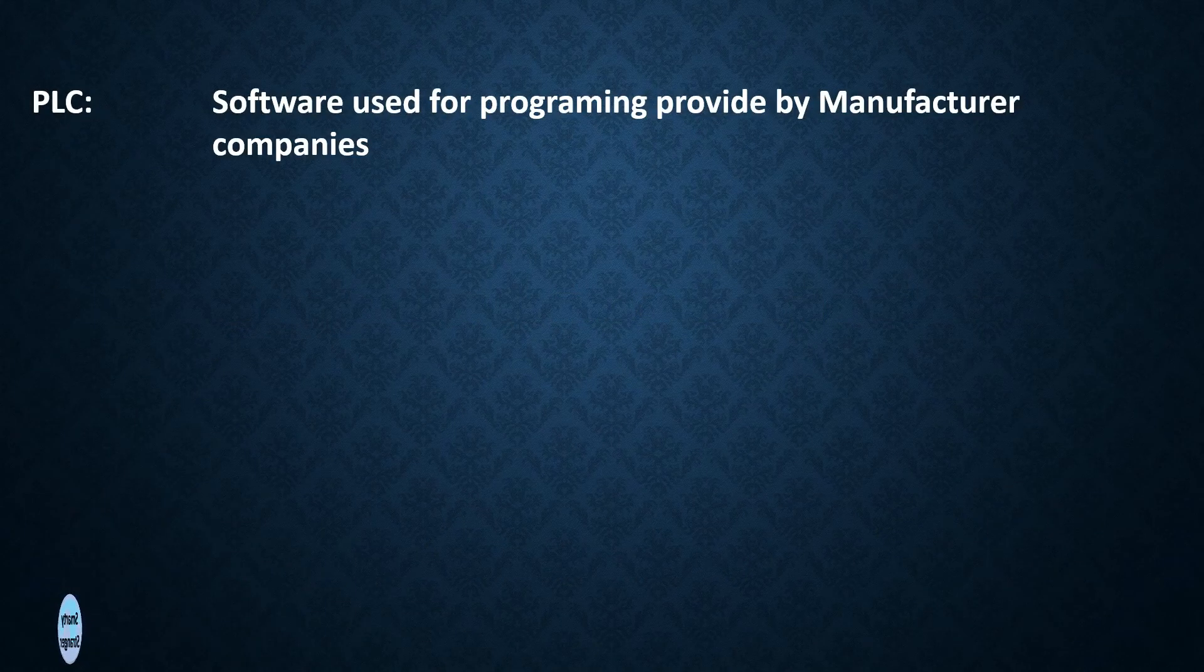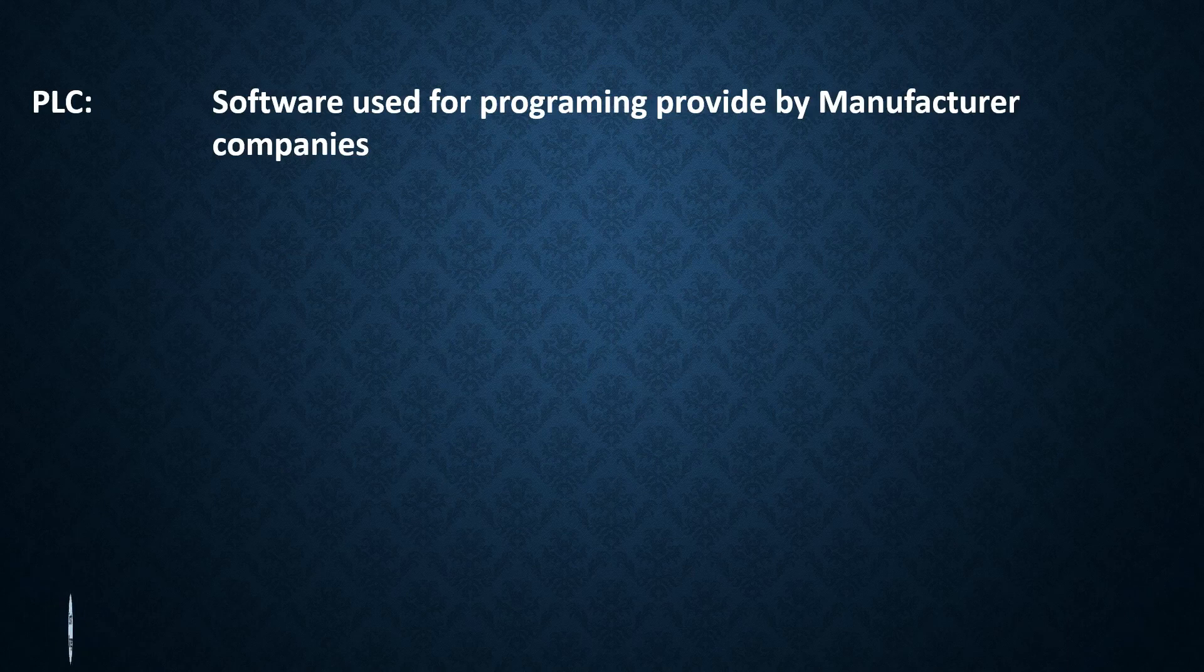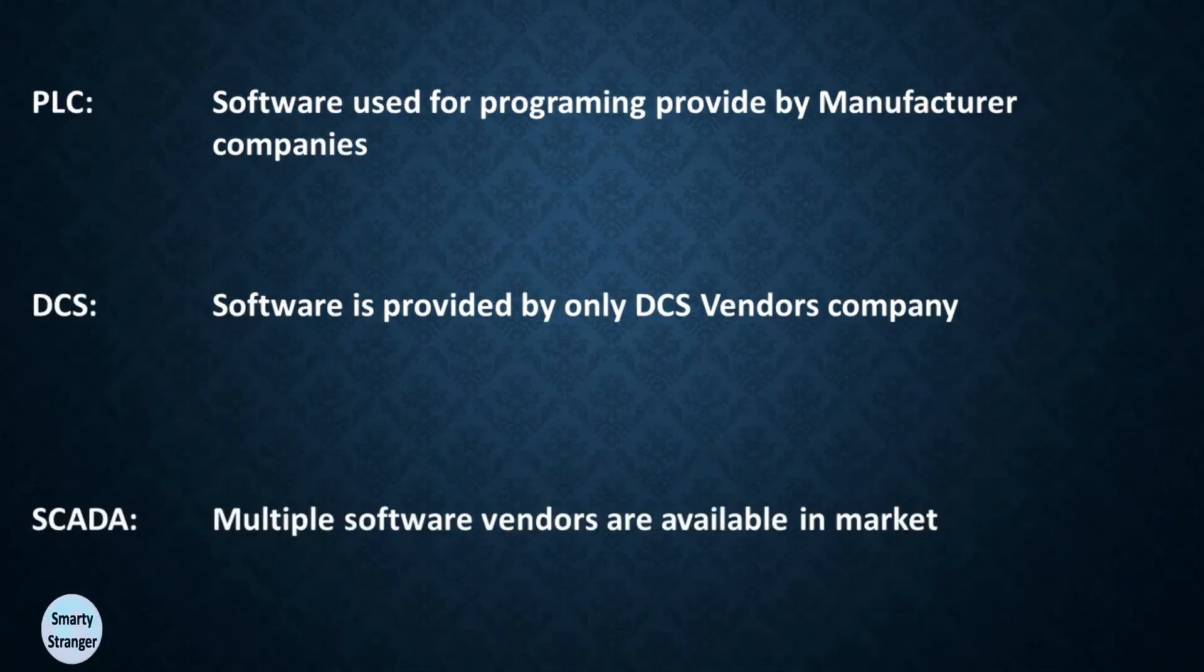In PLC, software used for programming is provided by manufacturer companies. Software is provided by only DCS vendor companies. For SCADA, multiple software vendors are available in the market.